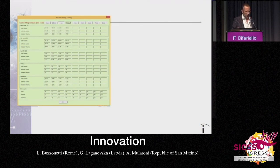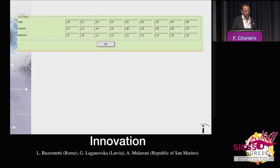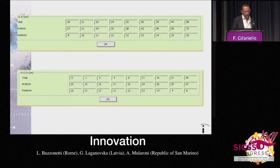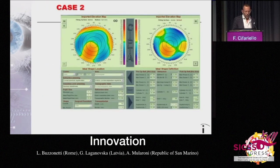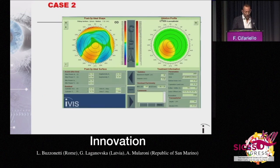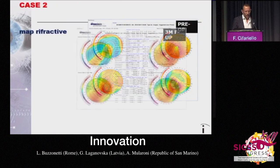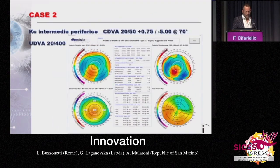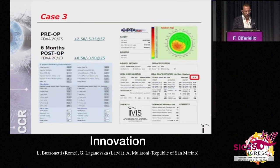Another important goal was to have good quality of vision by reducing high-order aberrations. These are the pre-op aberrations — total, anterior, and posterior respectively — and these are the post-op ones. So we have a clear reduction of aberrations, which goes to the benefit of the quality of a patient's vision. This is another case, where we may see that we have removed nearly 50 microns, and all these cases allow us to show the stability of the corneal shape over time. Here we have further evidence of the reduction in high-order aberrations.